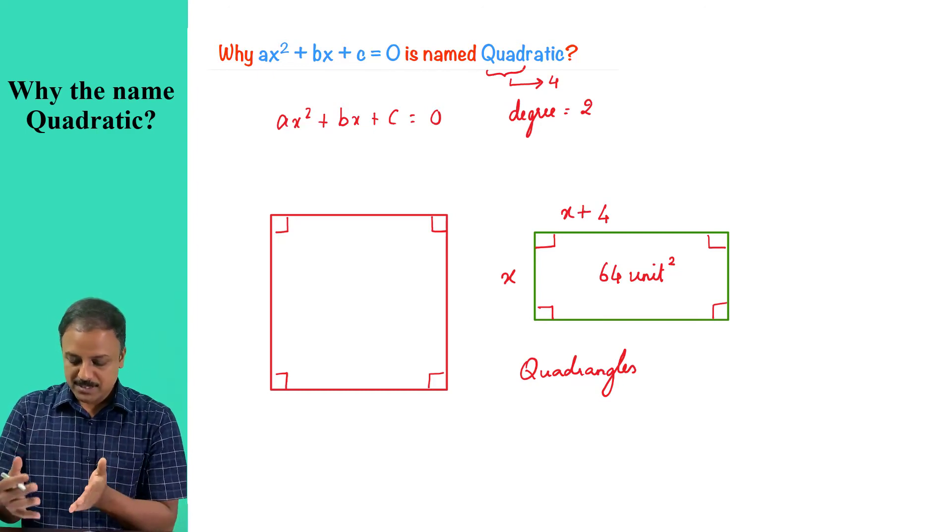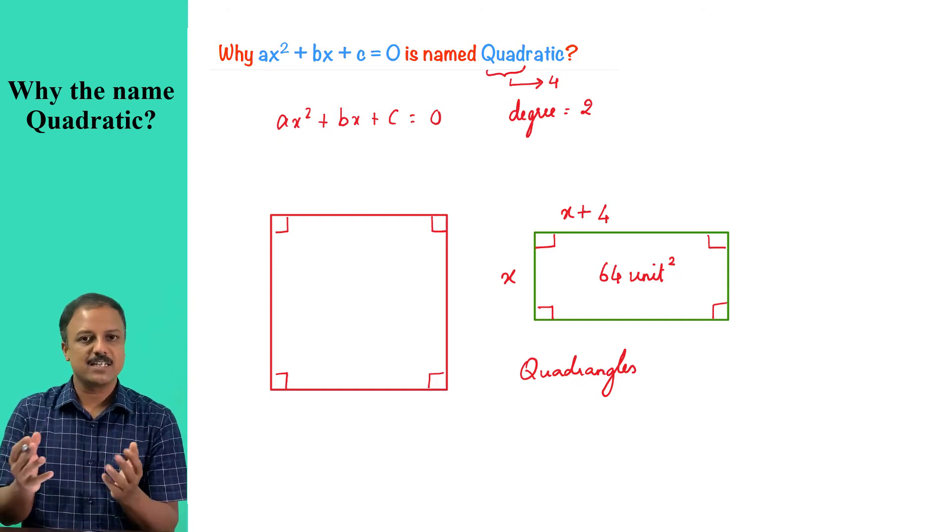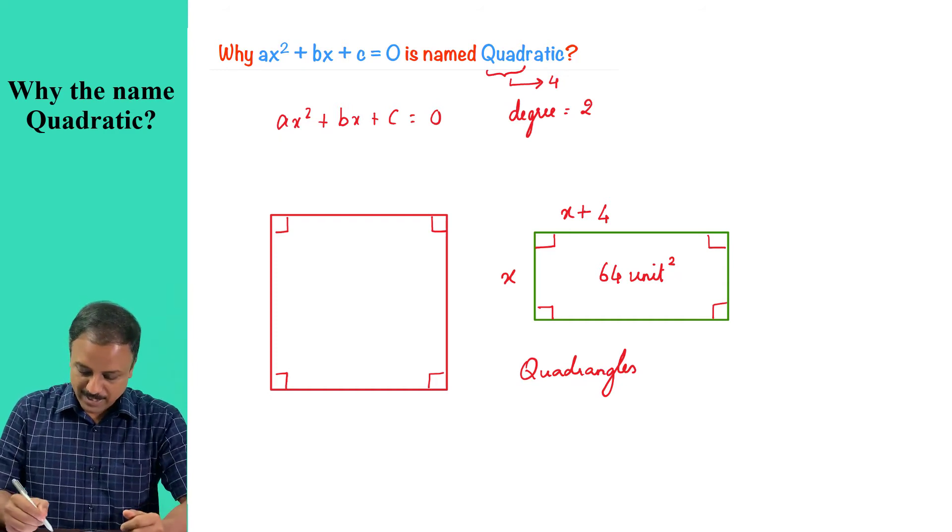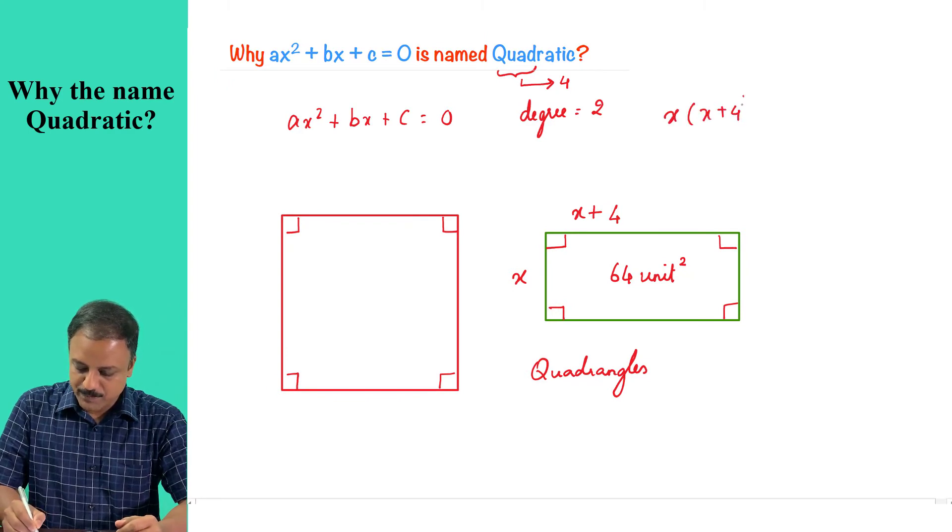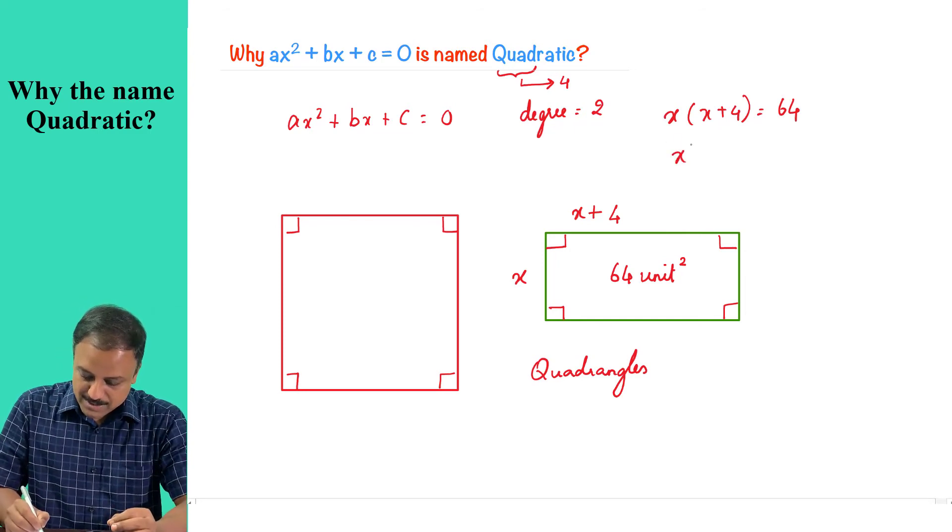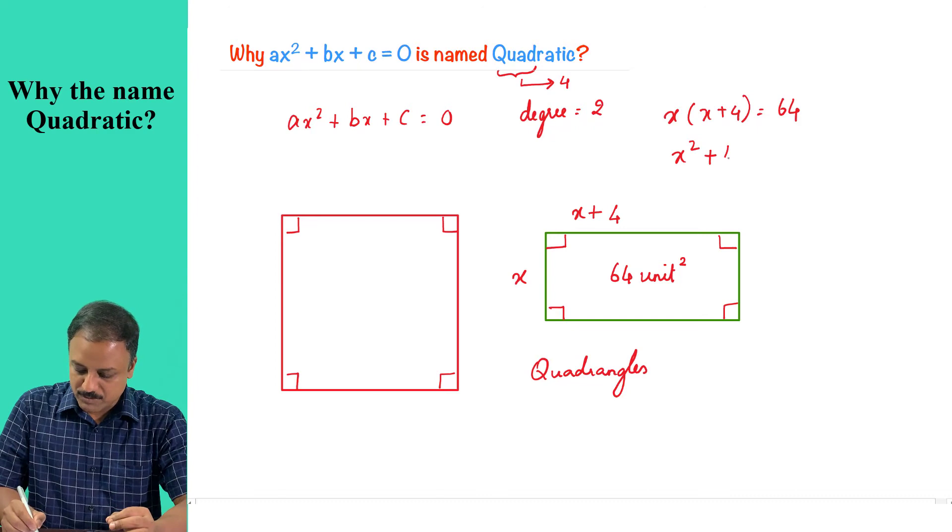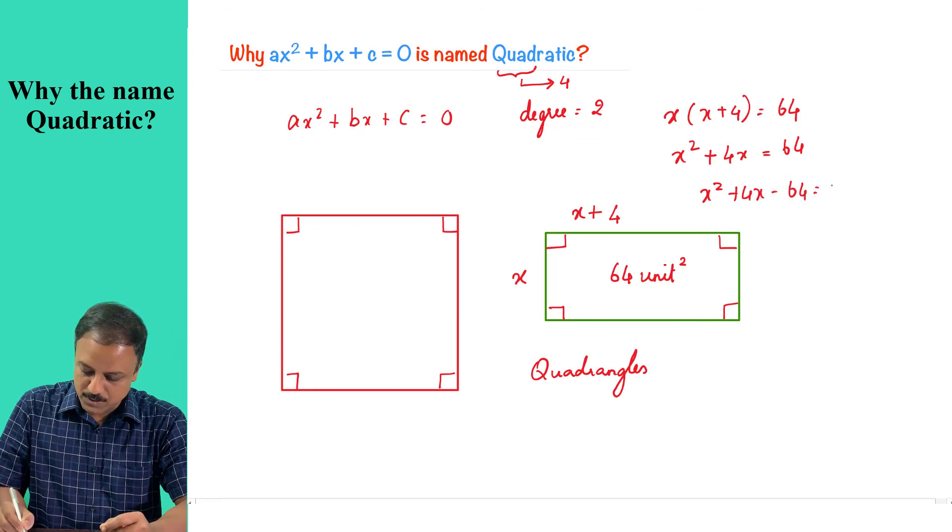Now, how do you represent this area here? You know area of a rectangle is length times breadth. So therefore, I can write this as x times x plus four equals 64. And so when you write it, it is x squared plus four x equals 64, or x squared plus four x minus 64 equals zero.